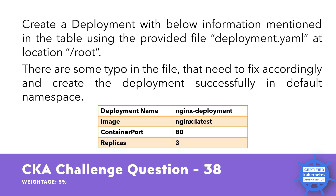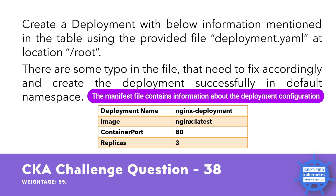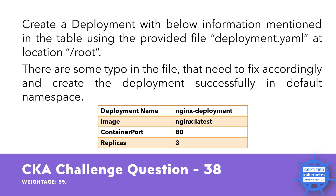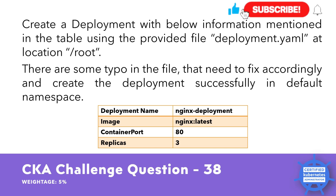This question is asking you to create a Kubernetes deployment named nginx-deployment using a YAML manifest file located at /root/deployment.yaml. The manifest file contains deployment configuration but has some typos that need to be fixed in order for the deployment to be created successfully in the default namespace.